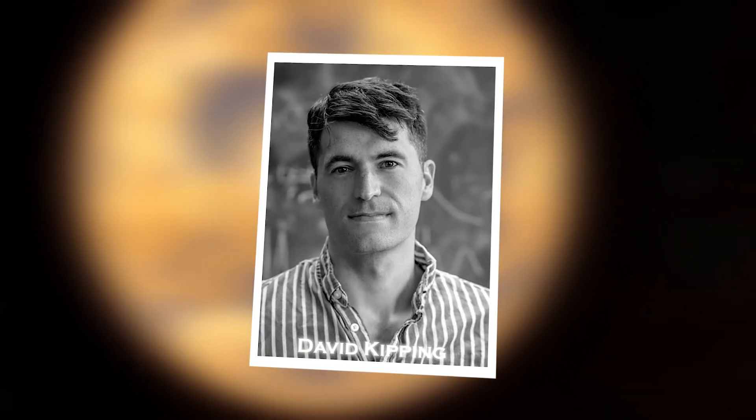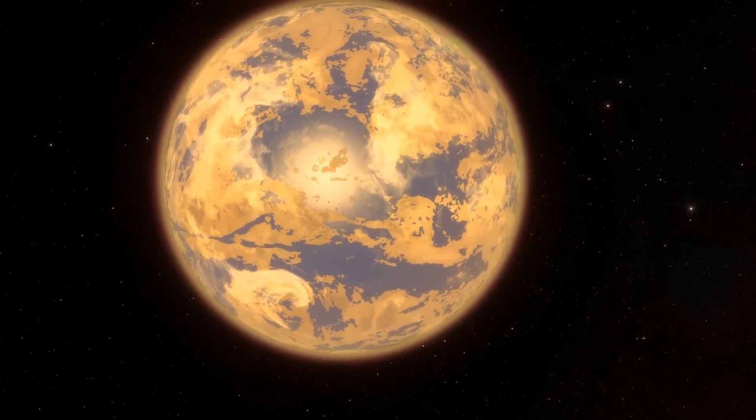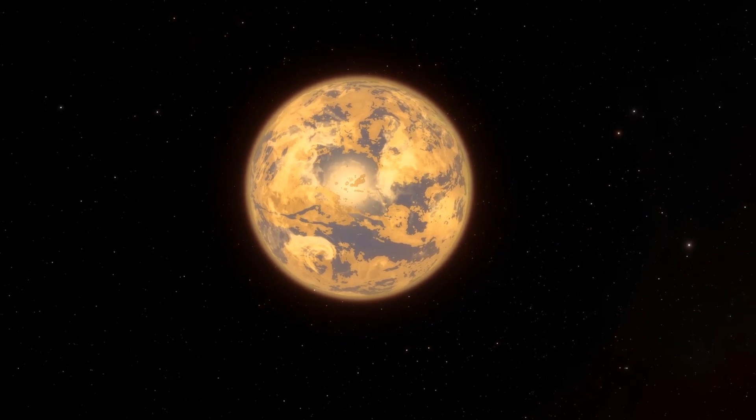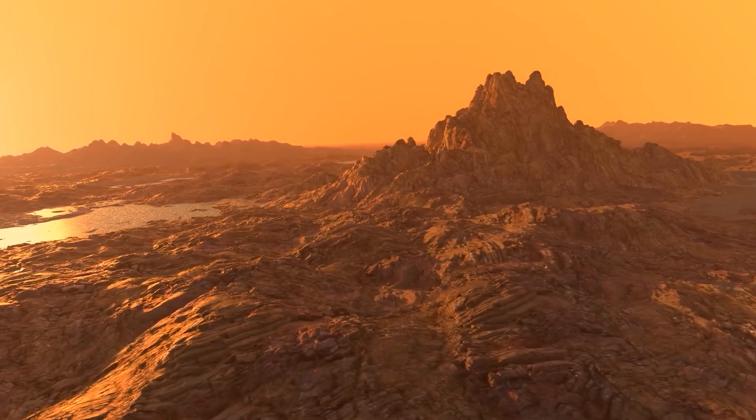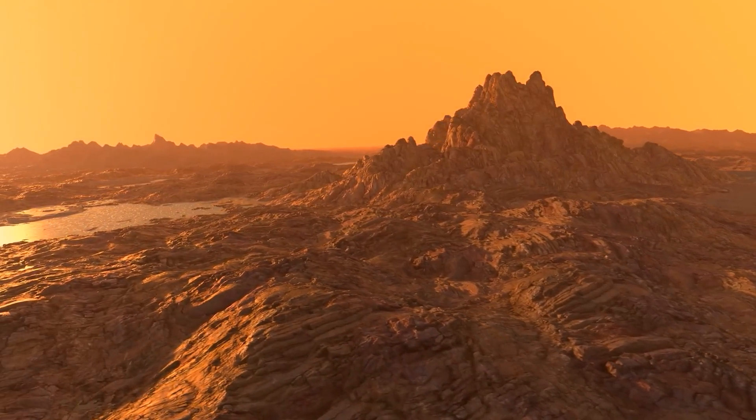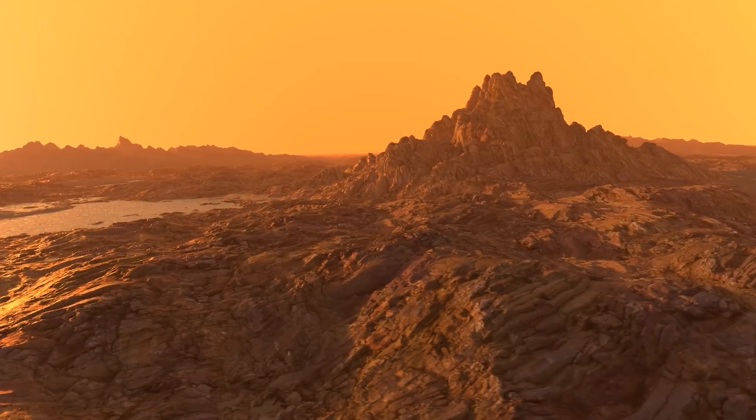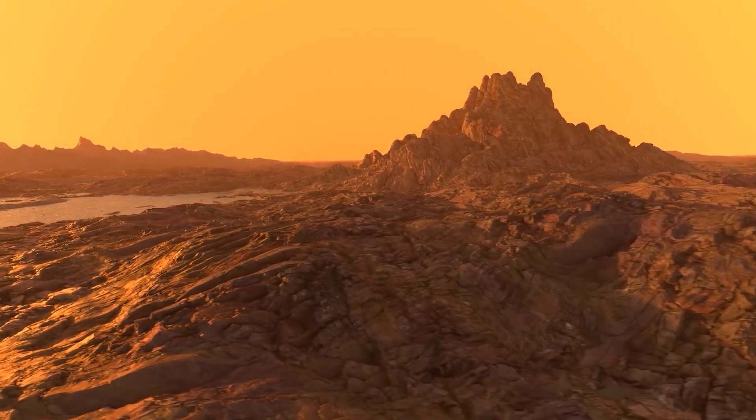David Kipping, an astronomer at Columbia University, characterizes the exoplanet Proxima b, where the urban lights have been sighted, as a celestial body with peculiar heating patterns that differ from those observed on other planets. While conventional rocky planets tend to absorb sunlight and emit infrared radiation, this exoplanet exhibits a markedly different infrared nature from its host star, Proxima Centauri.